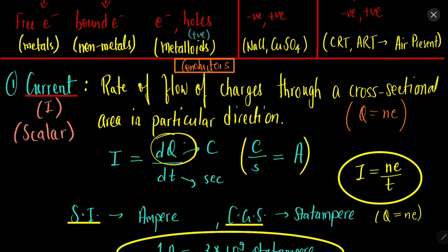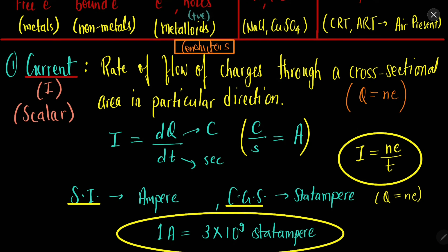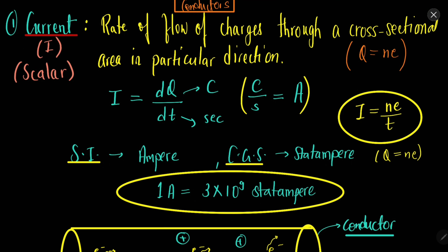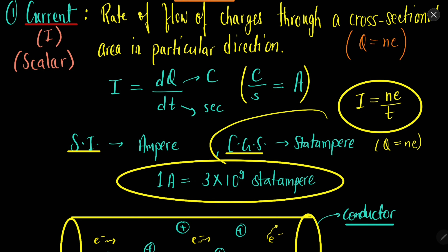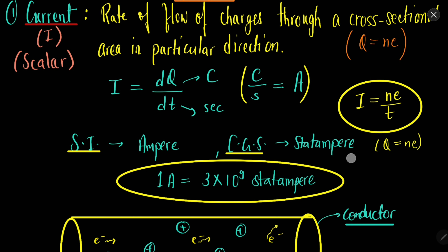The unit of current is ampere. Coulomb per second is also called ampere, so current is measured in amperes. We can also write current as Q by T. The CGS unit of current is statampere. One ampere is equal to 3 × 10⁹ statamperes.